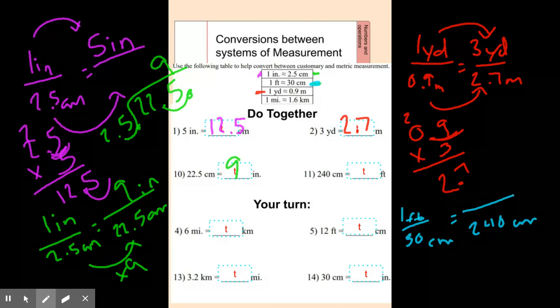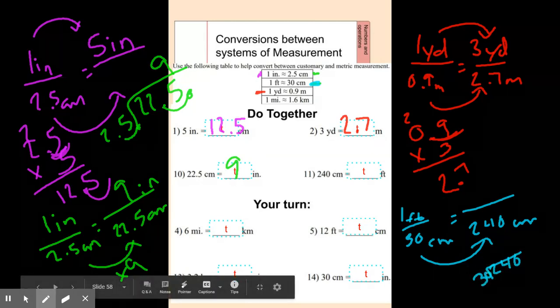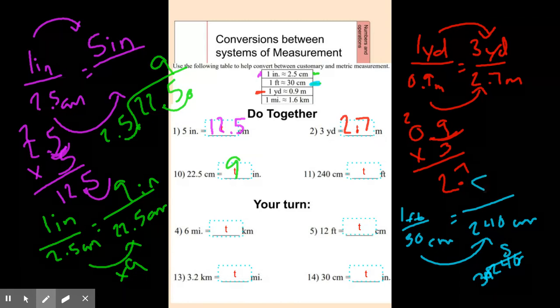We want to know how many feet. So again, we're going to work backwards to figure out what this is being multiplied by. So I'm going to do 240 divide by 30. If they both end in a zero, I can cross off the zero. And I'm doing 24 divided by 3, which is 8. So it would be 8 feet.